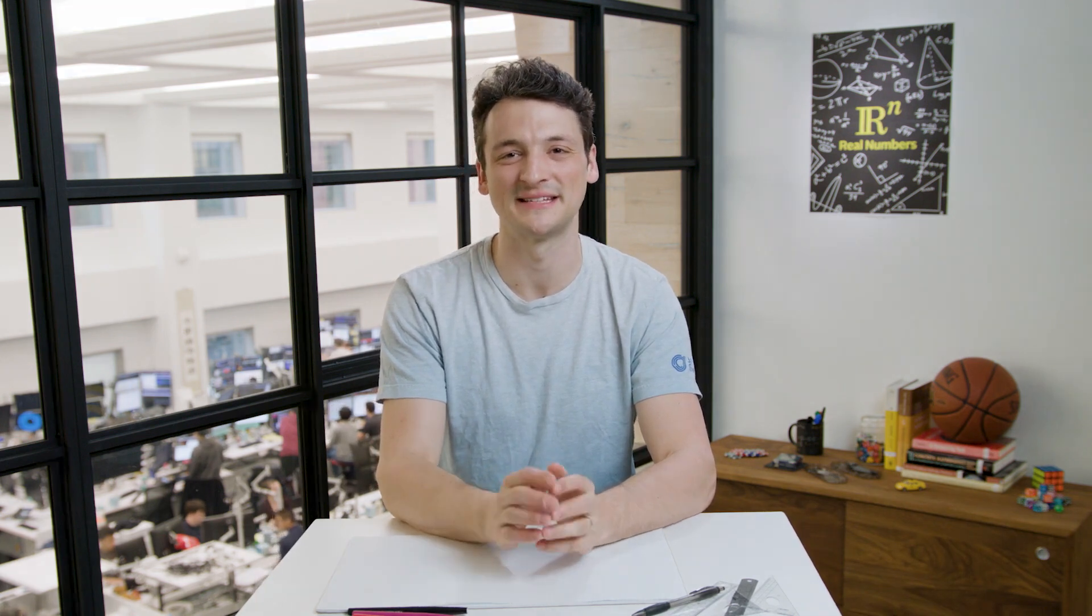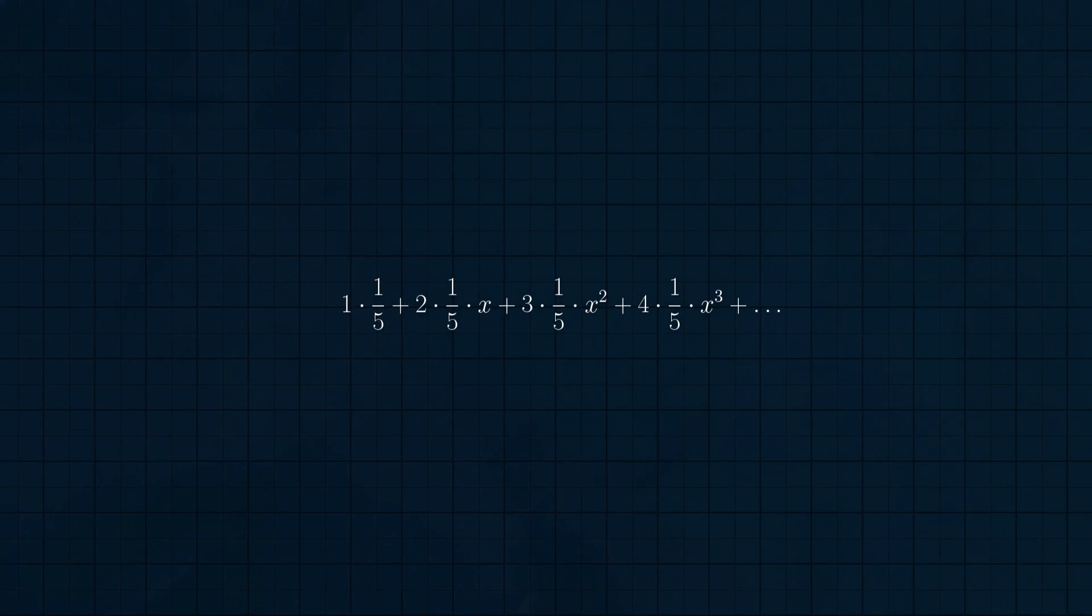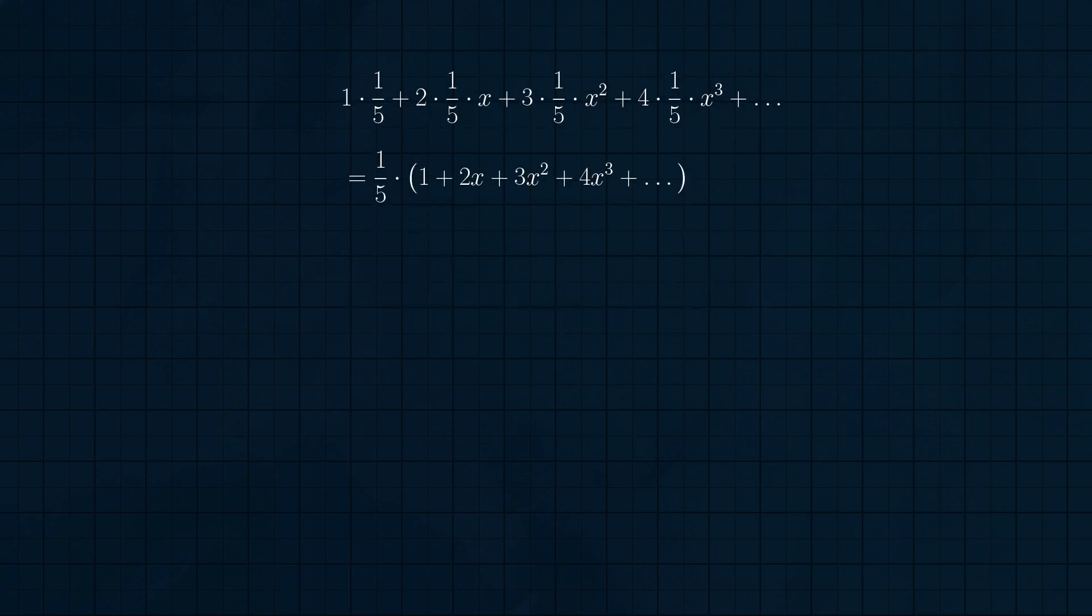Are you tired of getting five for an answer? Because I'm not! There's a slick calculus way to compute this sum by noticing that it's a particular value of a Taylor series. Let's replace every instance of four-fifths in the sum we are computing with x. So we get one times one-fifth plus two times one-fifth times x plus three times one-fifth times x squared and so on. Factoring out the one-fifth we get one-fifth times one plus two x plus three x squared plus four x cubed.